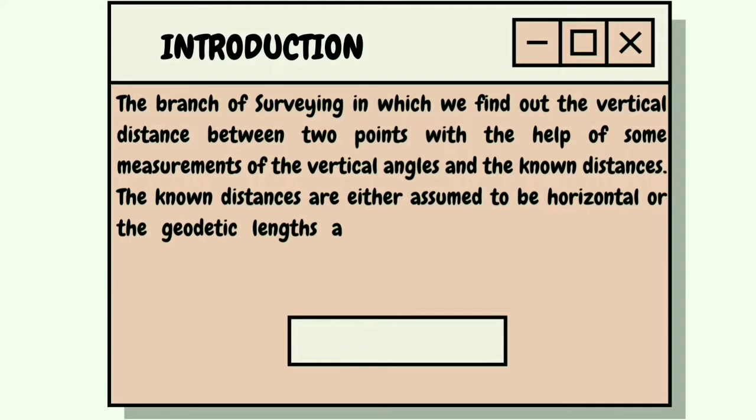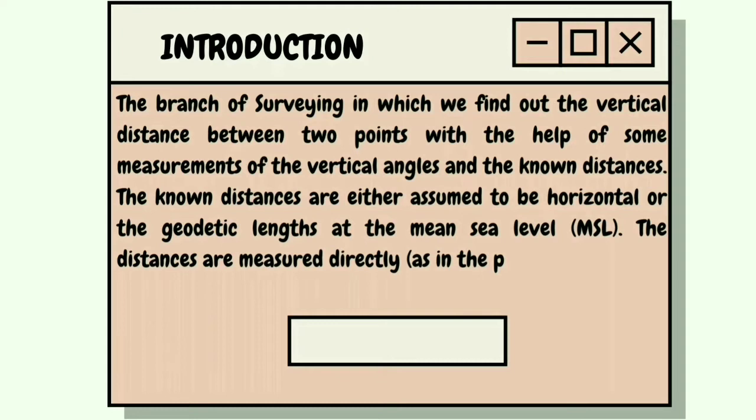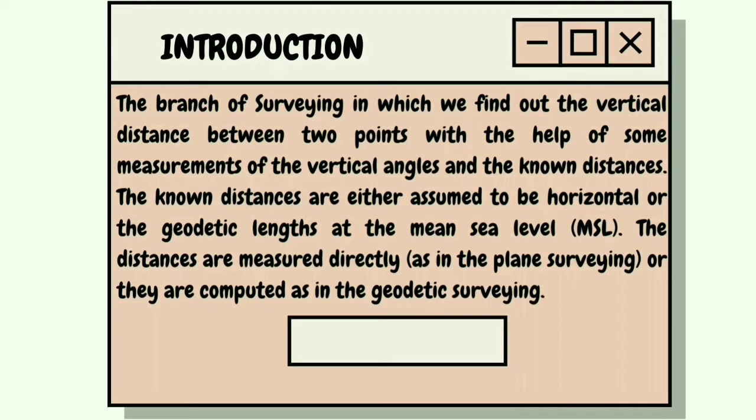The known distances are either assumed to be horizontal or the geodetic length at the mean sea level or MSL. The distances are measured directly as in plane surveying or they are computed as in geodetic surveying.